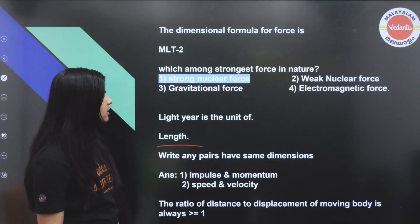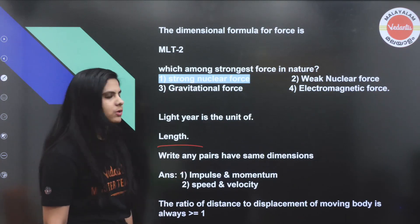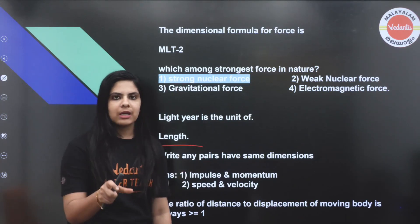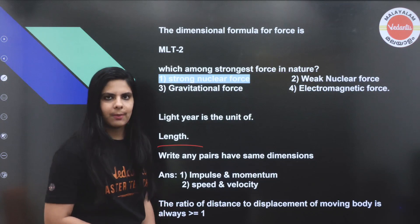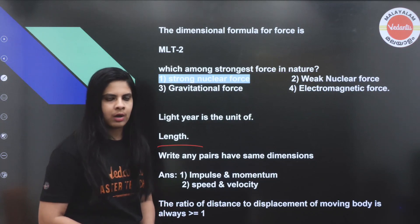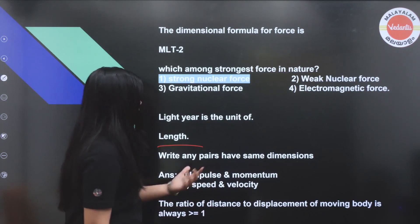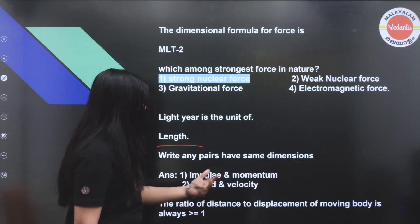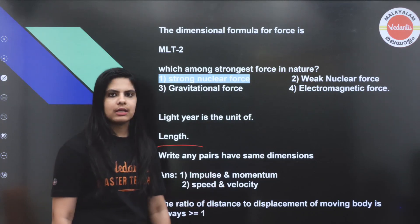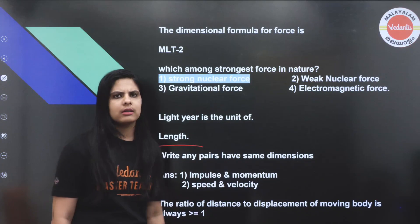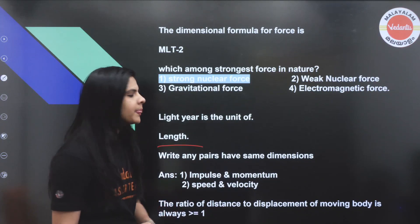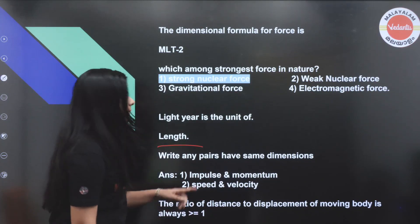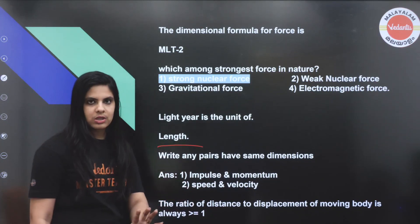Which pairs of quantities have the same dimensions? Pairs with the same dimensions include impulse and momentum, and speed and velocity. These are among the important pairs of physical quantities.